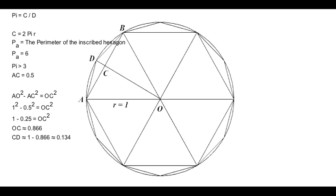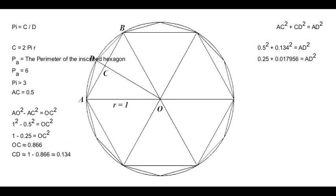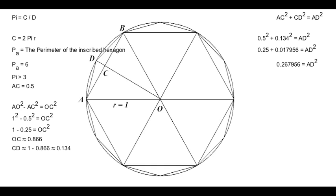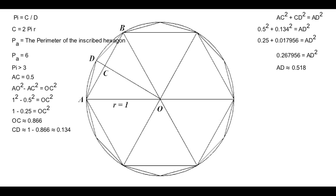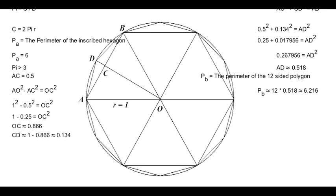Triangle ACD is also a right-angled triangle with the right angle at C, which means by the Pythagorean Theorem again, AC squared plus CD squared equals AD squared. We know AC is 0.5 and CD is 0.134, so the equation becomes 0.5 squared plus 0.134 squared equals AD squared, or 0.25 plus 0.017956 equals AD squared, giving 0.267956 equals AD squared. Therefore AD equals approximately 0.518. As you can see, AD is one side of the 12-sided polygon, which means that the perimeter of this polygon is 12 times 0.518, which equals 6.216. The circumference of the circle is 2 pi, and since the perimeter of the 12-sided polygon is 6.216, 2 pi is slightly greater than 6.216, or pi is slightly greater than 6.216 over 2, which equals 3.108.